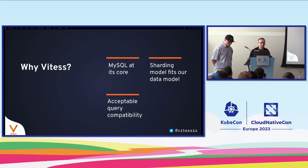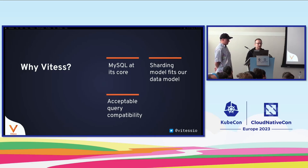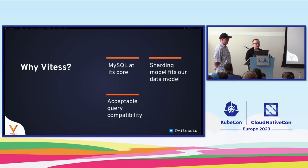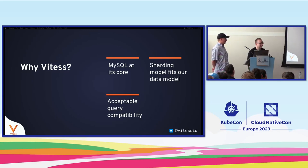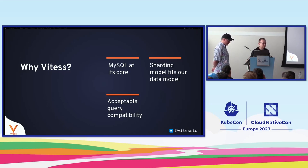Another reason: Vitesse's sharding model fits our data model very well. Most data on GitHub is scoped by repository, so sharding by repository ID is the natural way to scale out. Third, query compatibility between Vitesse and MySQL is acceptable — not perfect, as we ran into many issues, but we worked through them with help from maintainers like Florent and by contributing fixes to the Vitesse query planner, which is actually how I became a Vitesse maintainer.